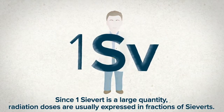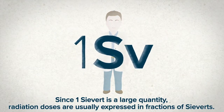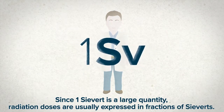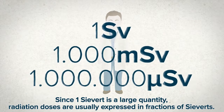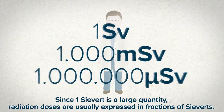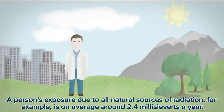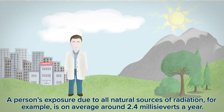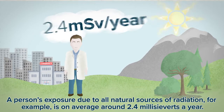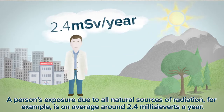Since one Sievert is a large quantity, radiation doses are usually expressed in fractions of Sieverts. A person's exposure due to all natural sources of radiation, for example, is on average around 2.4 millisieverts a year.